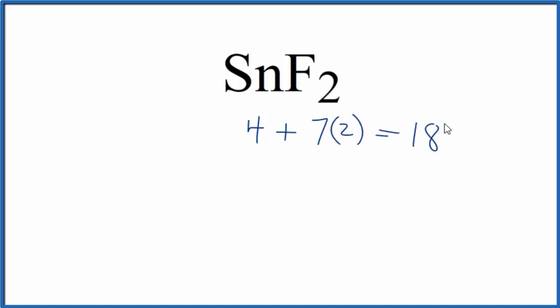That gives us a total of 18 valence electrons for SnF2. It's important to note that we're drawing the Lewis structure for SnF2 in the gas phase. If it isn't gaseous, it's a little bit different structure. So let's assume we have a gaseous form of SnF2 as we draw the Lewis structure.